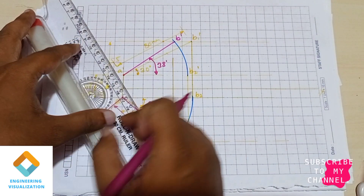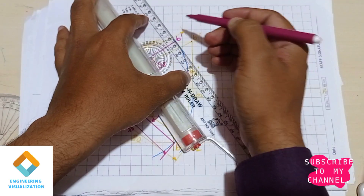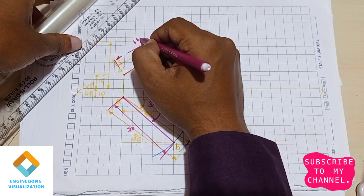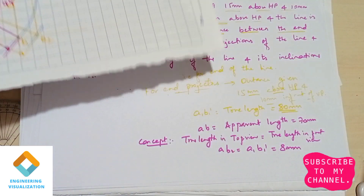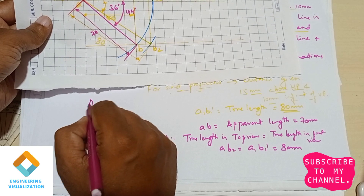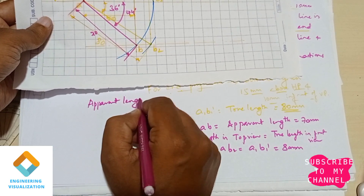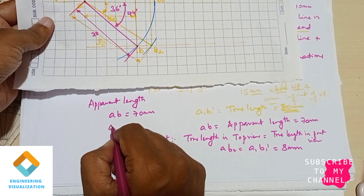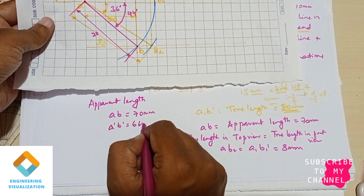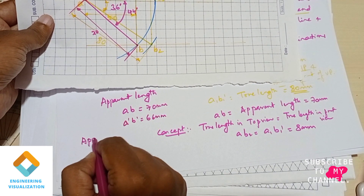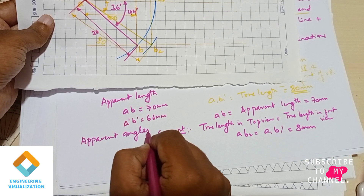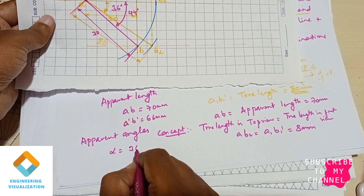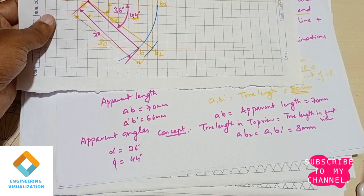Here we are finding out the upper end length in front view. So A B we got 70 mm. A dash B dash we are getting 66 mm. Upper end angles: alpha is 36 degrees and 44 degrees.